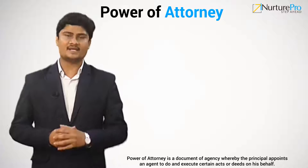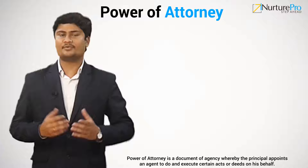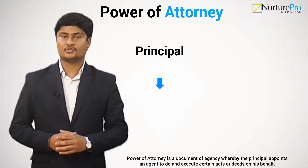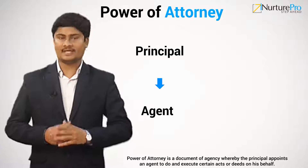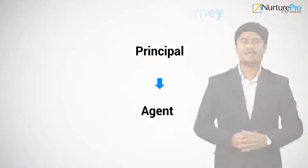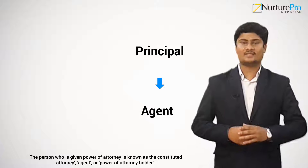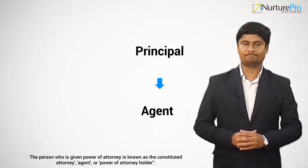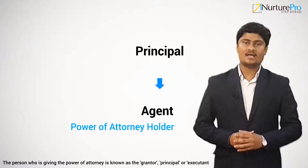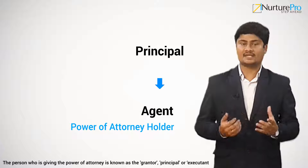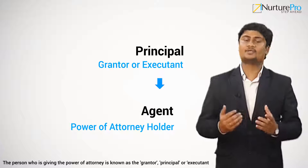Power of attorney is a document of agency whereby the principal appoints an agent to do and execute certain acts or deeds on his behalf. The person who is given power of attorney is known as the constituted attorney, agent, or power of attorney holder. The person who grants the power of attorney is known as the grantor, principal, or executant.